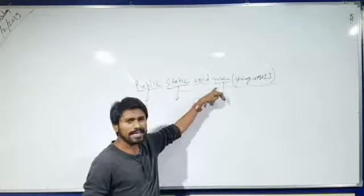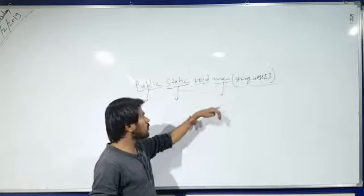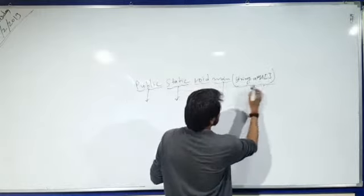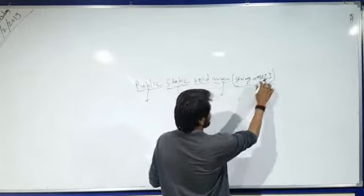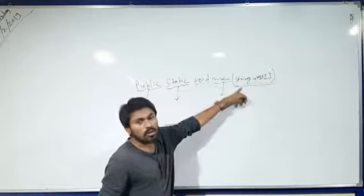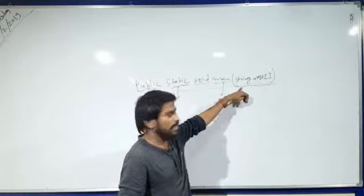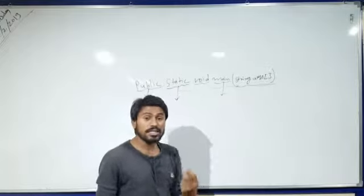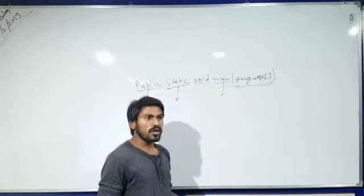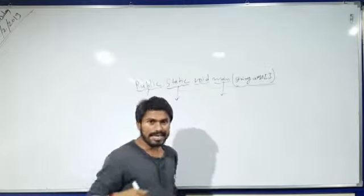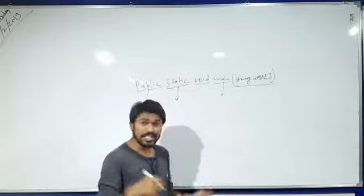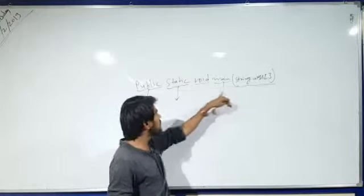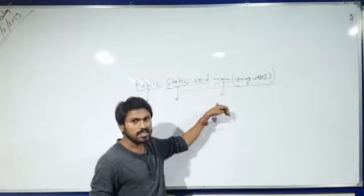In Java, main is the method name. Now, what is String args[]? This is called a command line argument, and command line arguments are used for user input. So if I want to take any input from the user, then we can use command line arguments. This is a very important concept in Java.